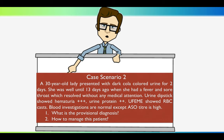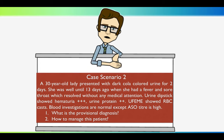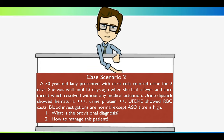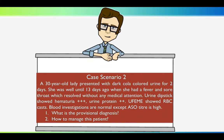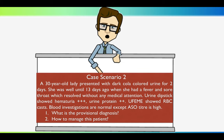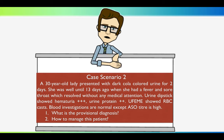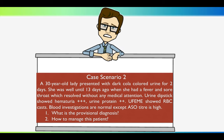Case scenario 2: a 30-year-old lady presented with dark-colored urine for the past 2 days. She was well until 13 days ago when she was having a fever and sore throat, which is a URTI. Urine dipstick shows hematuria, RBC 3+, protein 2+. Urine FEME shows RBC casts. Blood investigation is normal except ASO titer is pretty high. So, what is the provisional diagnosis — is it nephrotic or nephritic?